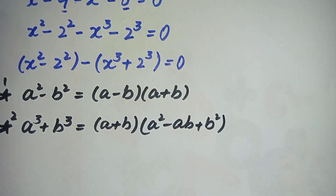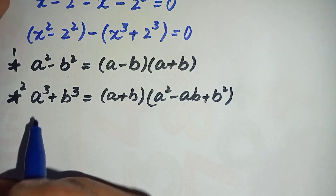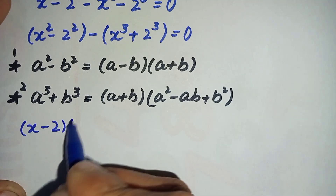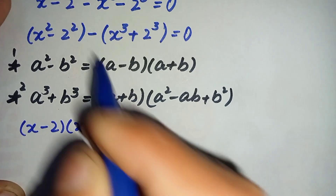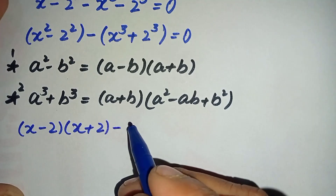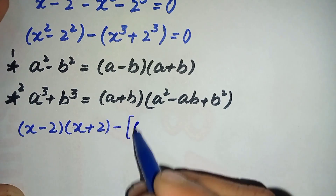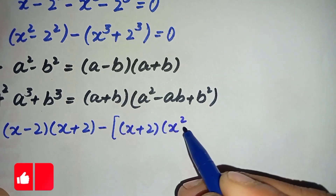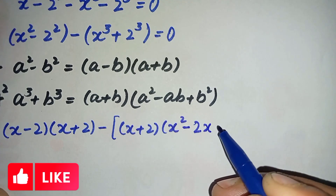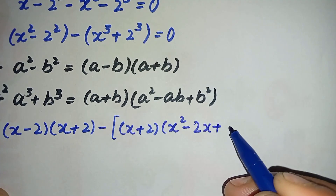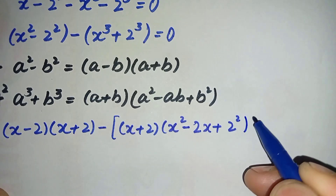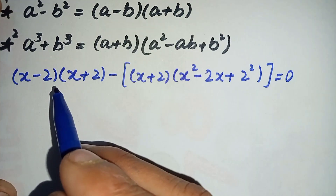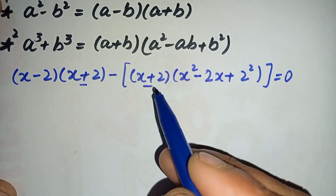Applying these two identities to our equation, the first term becomes (x minus 2)(x plus 2), and the second term becomes (x plus 2)(x squared minus 2x plus 2 squared).